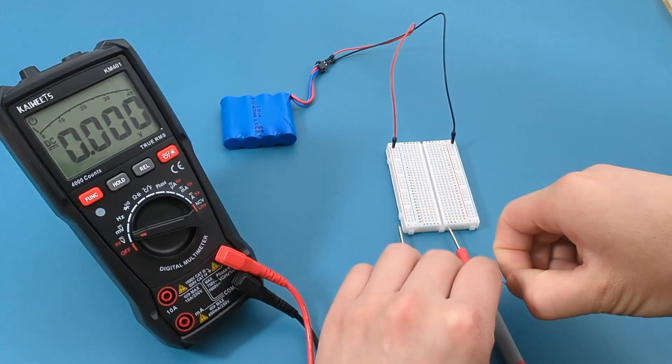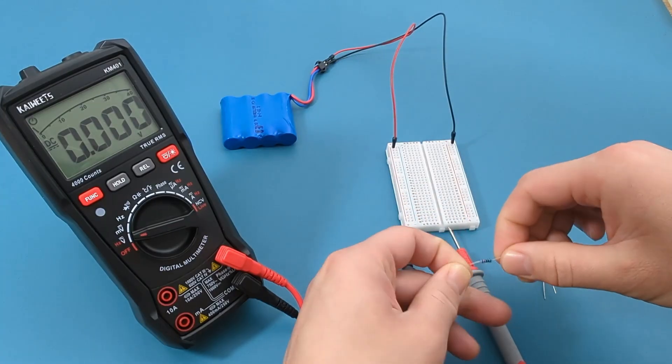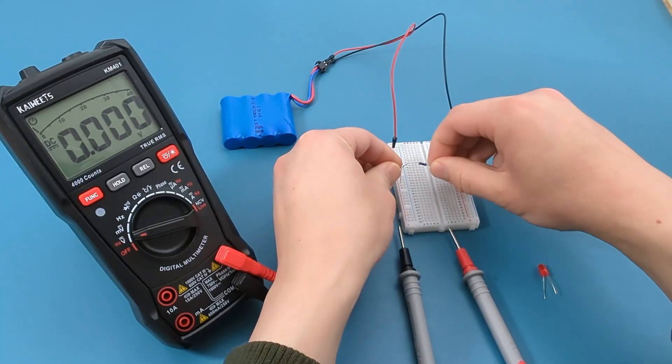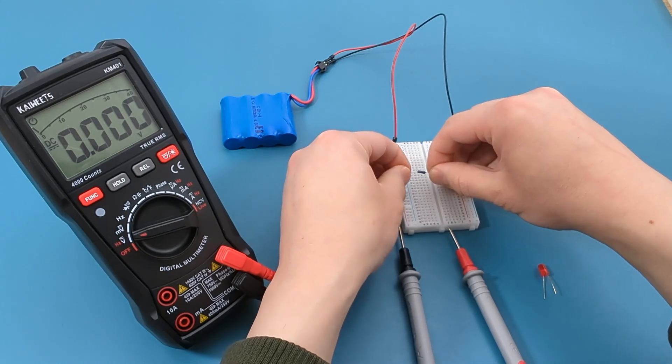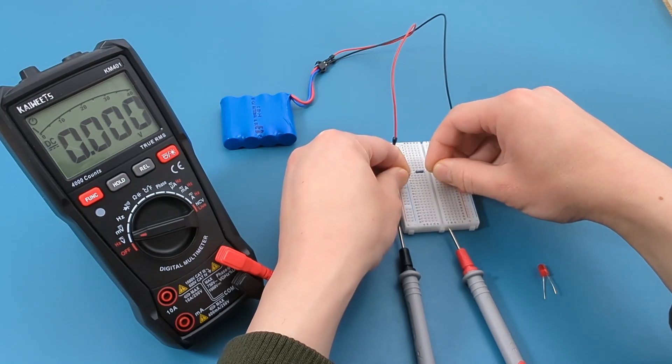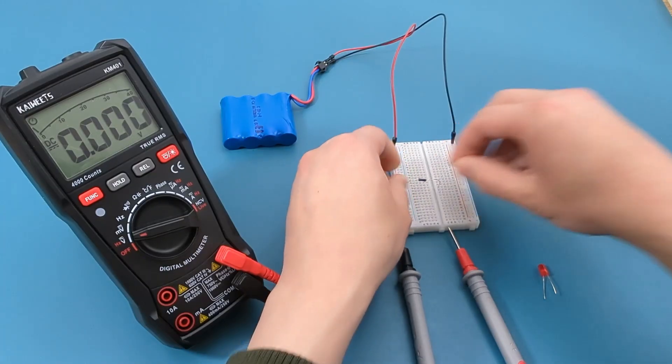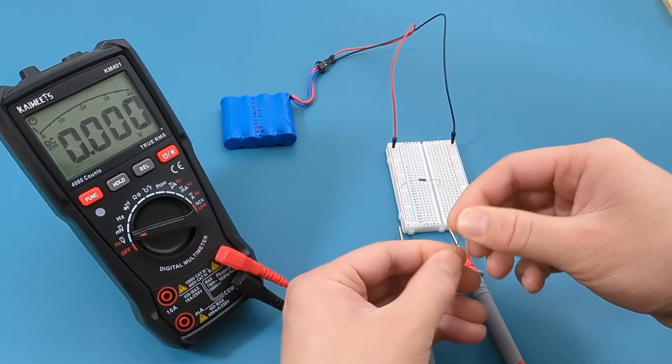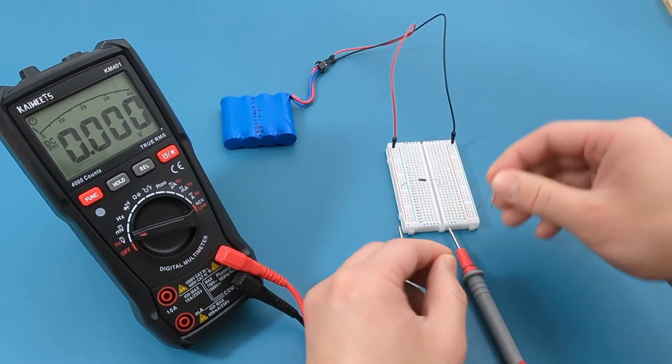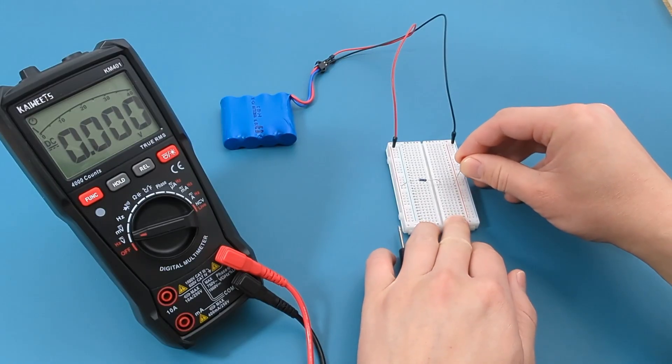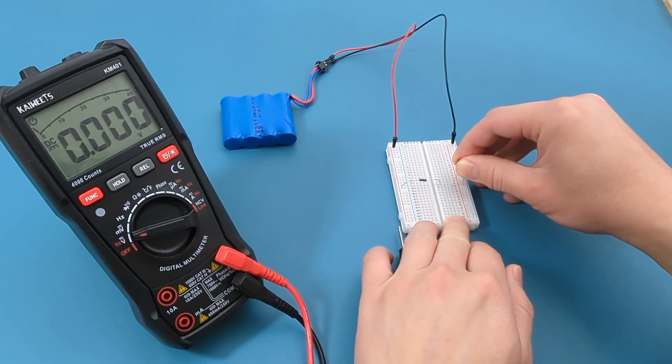Bend the wire ends of the resistor. Insert one end of the resistor into the same column on the breadboard as the positive end. Insert the other end into the middle of the breadboard. Insert one end of the LED into the middle of the breadboard. Insert the other end of the LED into the same column on the breadboard as the negative end.